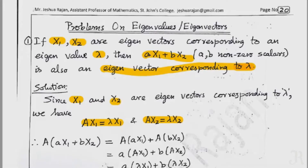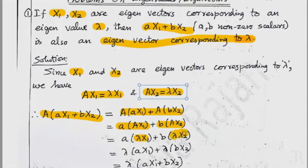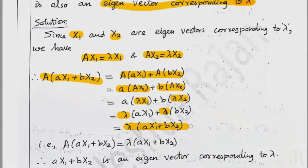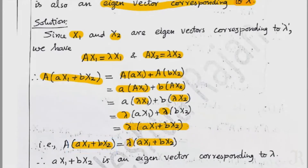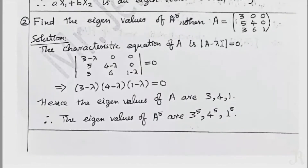The proof is simple. We compute A into the linear combination vector, which gives lambda into the same vector. So that vector satisfies A times vector equals lambda times the same vector, confirming that vector is an eigenvector corresponding to this lambda.